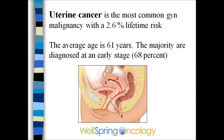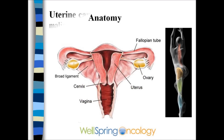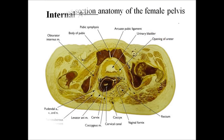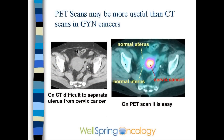The anatomy of the uterus is important. Surgery generally includes removing the uterus and cervix, as well as often the ovaries and tubes. The cancer arises in the endometrium or lining and invades the myometrium. Cross-sectional anatomy is important in understanding and interpreting CTs, PET scans, or MRIs. A PET scan can be very helpful in a GYN malignancy.